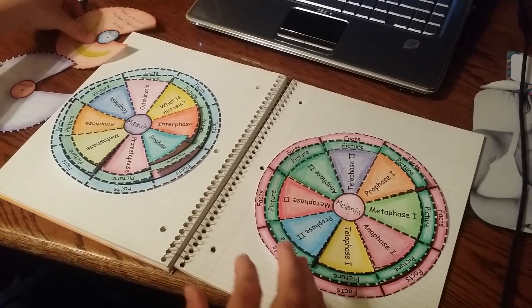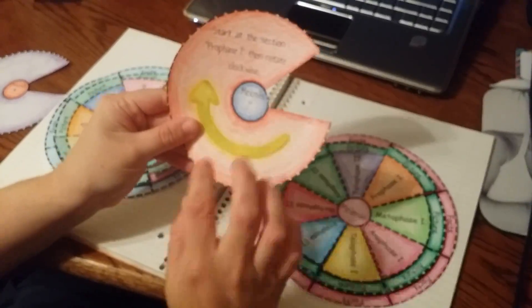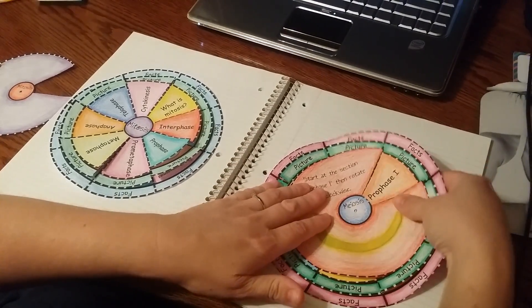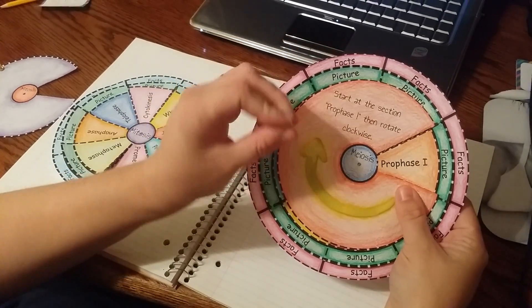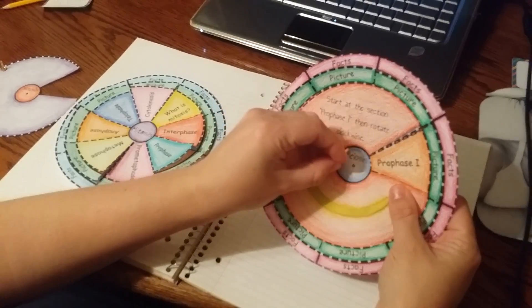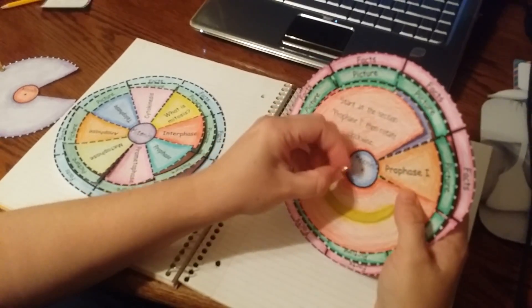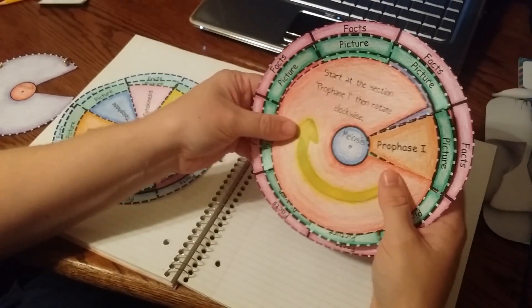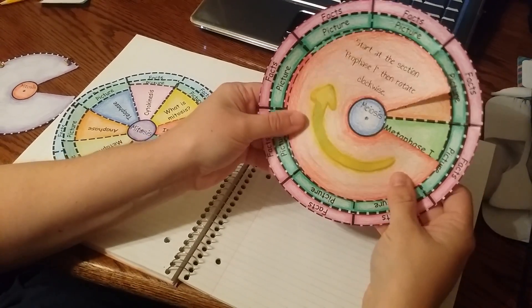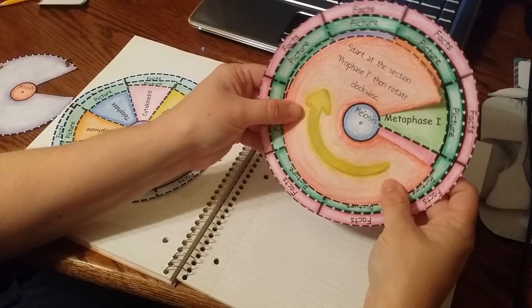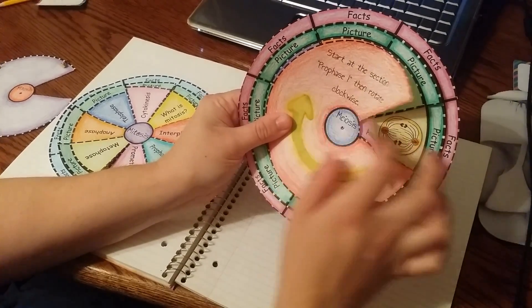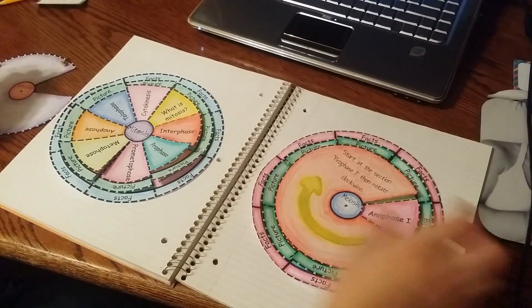A third option is you can have students create their cover, and these covers go right over the foldables. You can give them a paper fastener. They can put a hole in the center and put the paper fastener in the middle, and then they can turn the wheel in order so that they can see the different phases. And then they can lift the tabs and see a picture and facts.